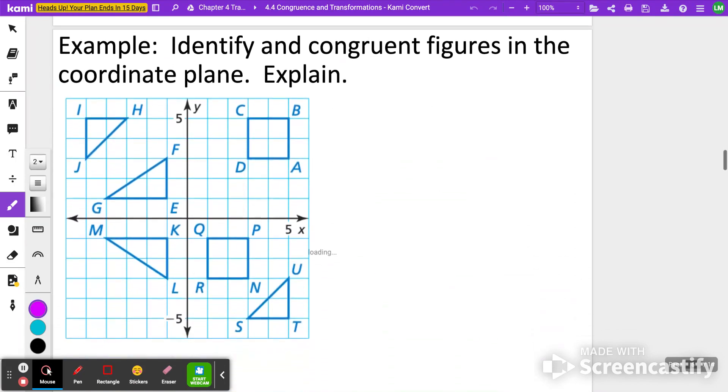So what we're going to do here is identify congruent figures in the coordinate plane, and then explain. Let's start with this down here, square QPNR. So square QPNR is congruent to square ABCD, because they're both 4x4. The only thing different is that it was translated 2 to the left and 1, 2, 3, 4, 5, 6 down. So they both have 2x2 area.